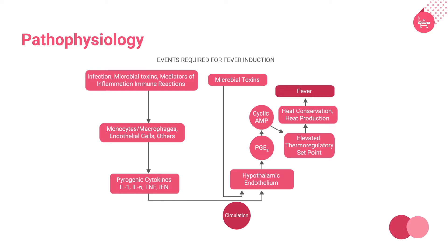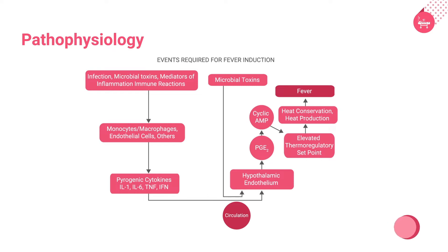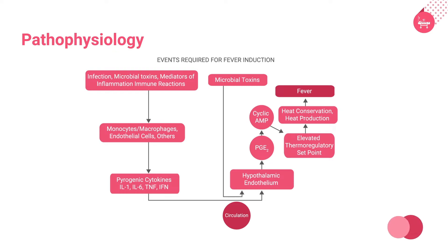The hypothalamic thermoregulatory center accomplishes heat production by inducing shivering and heat conservation through vasoconstriction. At an established degree, fever is regulated even at a temperature of over 41 degrees Celsius. The heat production approximates heat loss at a higher level of the setpoint; therefore, the fever does not climb up relentlessly.